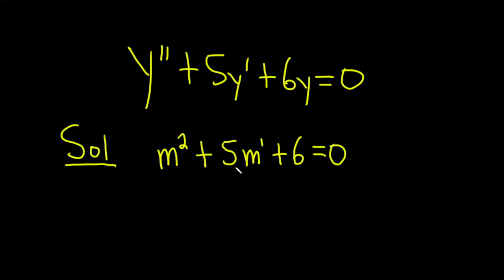And again, this is called the characteristic or auxiliary equation. Now we go through the process of finding the solutions to this equation.